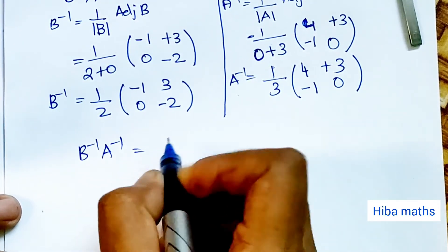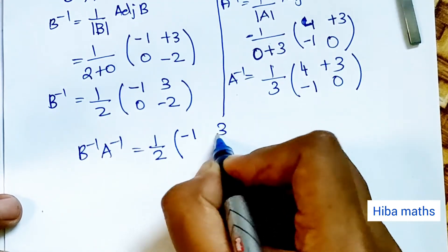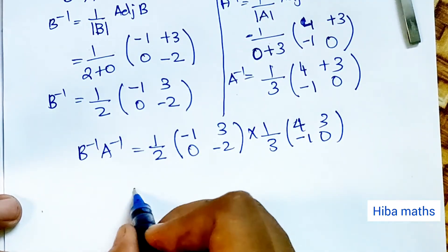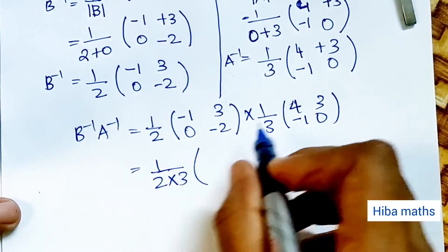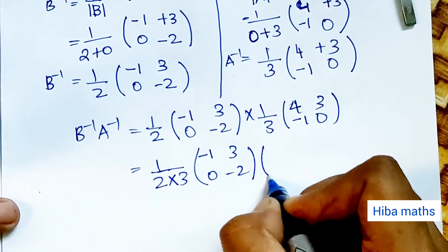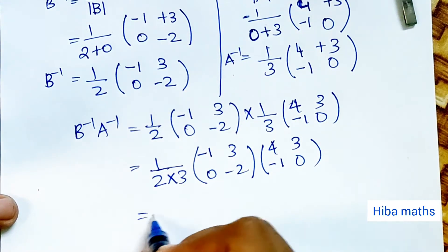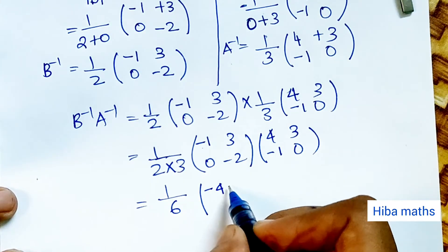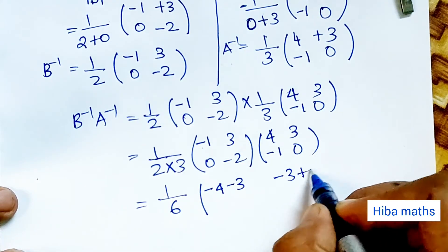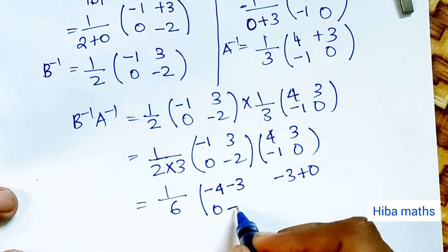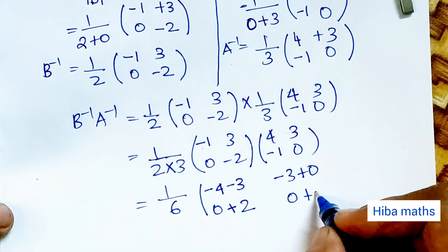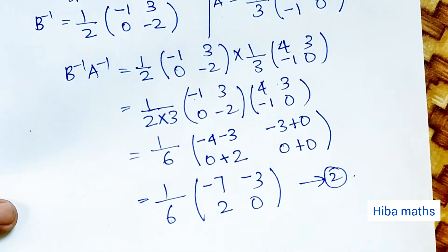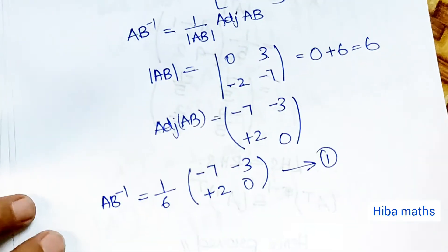B inverse into A inverse equals 1 by 2 into [−1, 3; 0, −2] multiplied by 1 by 3 times A inverse [4, 3; −1, 0]. This gives 1 by 6 times [−1×4 + 3×−1, −1×3 + 3×0; 0×4 + −2×−1, 0×3 + −2×0], which equals 1 by 6 into [−7, −3; 2, 0]. This is our second equation.